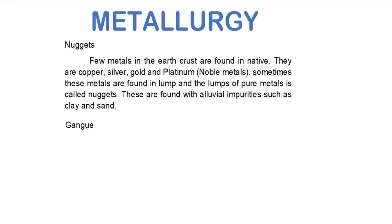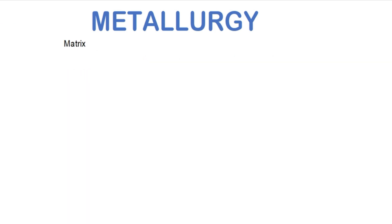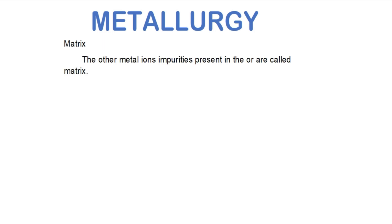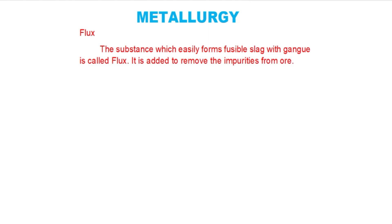Next, gangue: gangue is the impurities associated with the ores. Matrix: the impurities of other metal ions associated with the ores is called matrix. Flux: flux is the substance that forms fusible slag with the gangue. When flux is added to the gangue, it forms a fusible impurity — flux is generally added to remove impurities from the ores. Slag: the waste material formed by the gangue and flux is called slag; it is a fusible waste material.